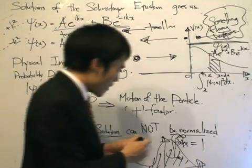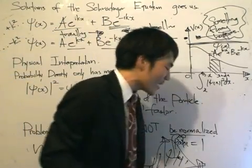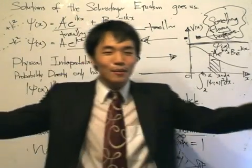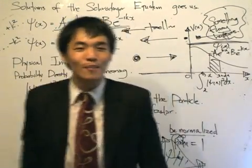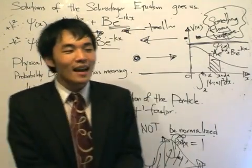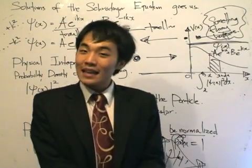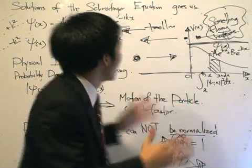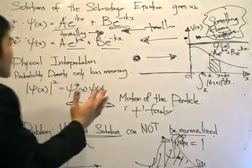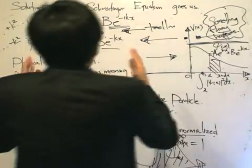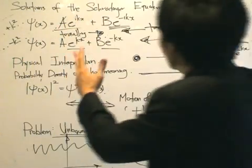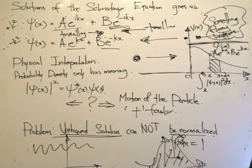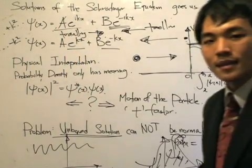So if somebody asks you about quantum mechanics, you can tell them my story about the mouse and the cat — hopefully they understand it. If not, at least understand the physical meaning of these solutions to the Schrödinger equation. Thanks.